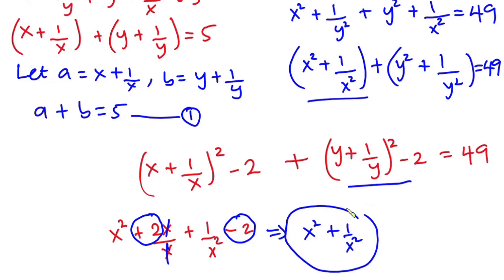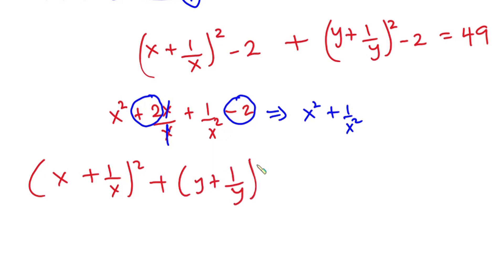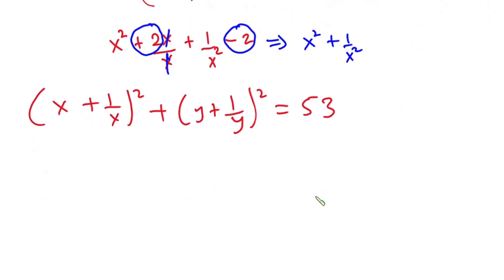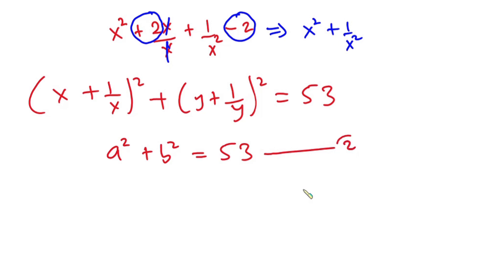So applying the same identity to both terms, we have (x plus 1 over x) squared plus (y plus 1 over y) squared is equal to 49 plus 4, which gives 53, since we moved the negative 2 and negative 2 — that is negative 4 — to the right side. Don't forget that x plus 1 over x equals a and y plus 1 over y equals b, so this equation becomes a squared plus b squared equals 53. I'm going to call this equation 2.